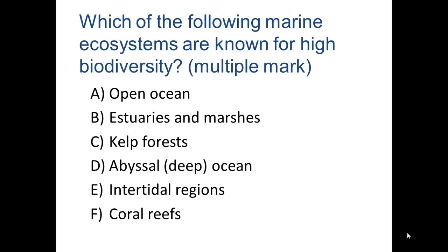Welcome back. Did you say intertidal regions? That's probably number one for biodiversity. We also have estuaries and marshes, which are considered ecotone areas where freshwater and saltwater ecosystems come together, producing a large variety of biodiversity. Coral reefs of course provide habitat for many different varieties of species.